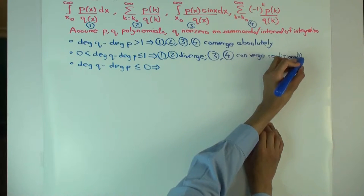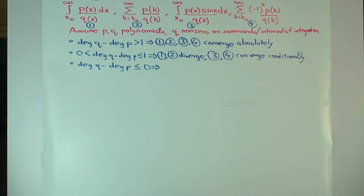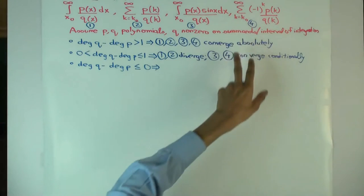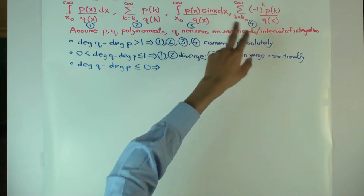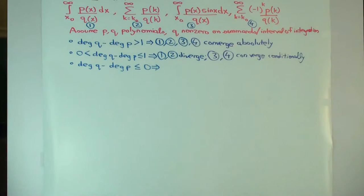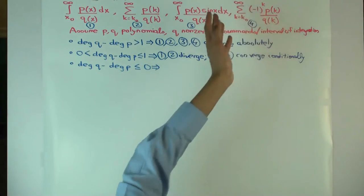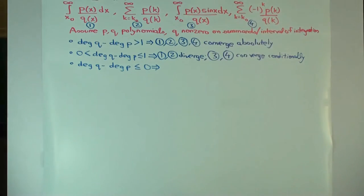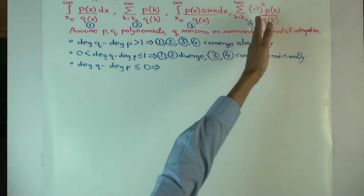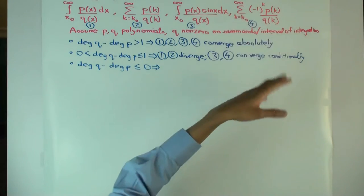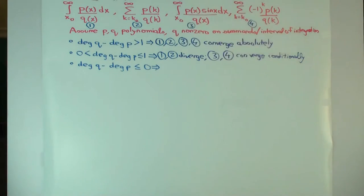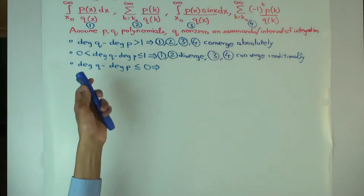Conditional convergence means that if you took the absolute values and added them up, it wouldn't actually converge. So it converges as written, but the absolute value sum doesn't converge. That also means if you rearrange it, maybe it doesn't converge or converges to something different.